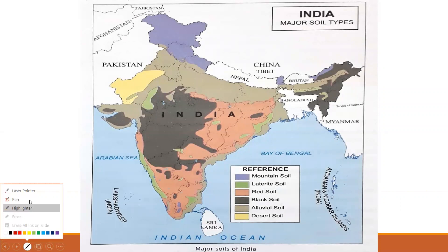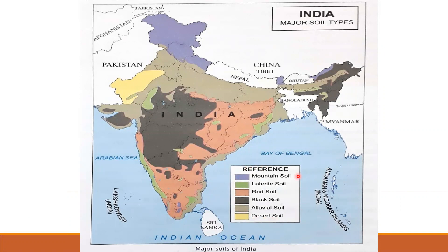Now let us read this map, children. This map is given on page number 63 in your social studies textbook. Look at the reference given here. You can see that the types of soil are shown using different colors. These soils are spread over different regions of India.